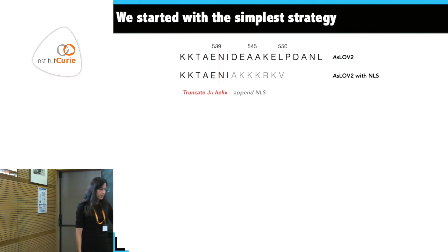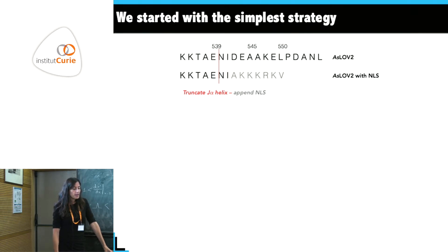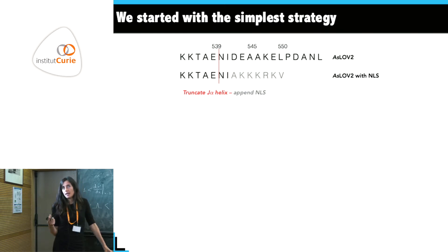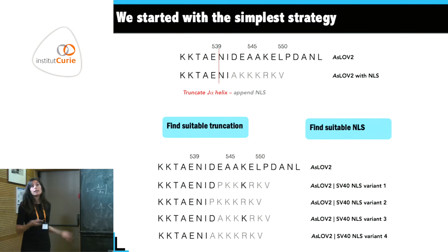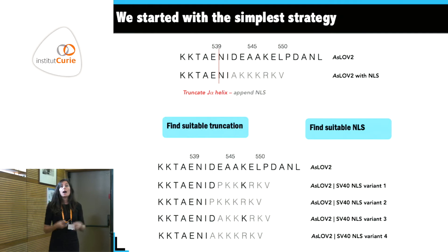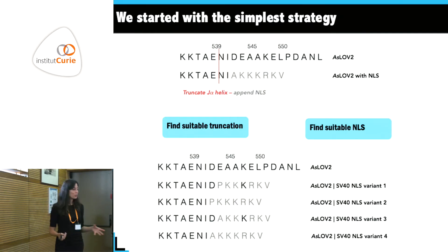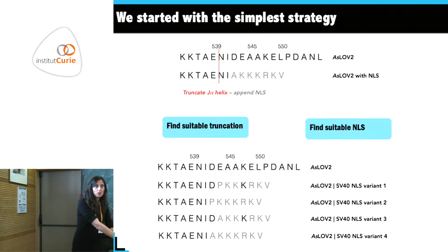We had to truncate the J-alpha helix and append an NLS, which meant finding both a suitable truncation and a suitable NLS. NLSs have been studied out of their normal context — typically by attaching one to a GFP and showing that GFP becomes nuclear, proving the sequence is transplantable to other contexts.